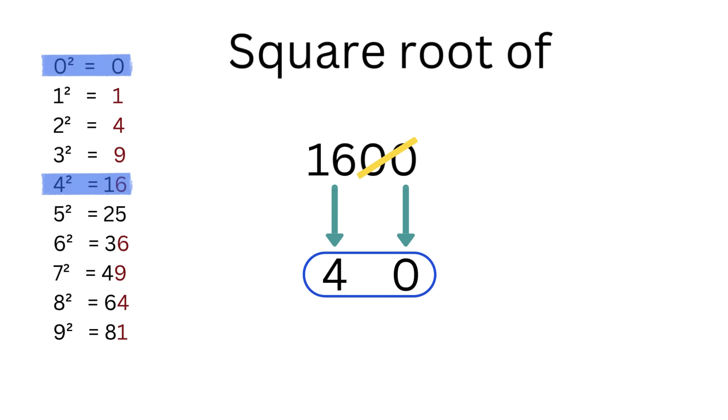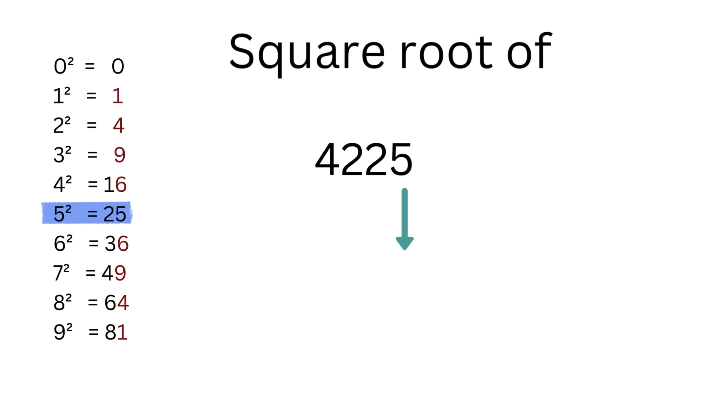Now this was a simple example, but this method will show its value in more difficult examples. So let's go ahead with another example. Let's calculate the square root of 4225. The last digit is 5 and that corresponds to the last digit of 5 squared which is equal to 25. So we write the digit 5 here.